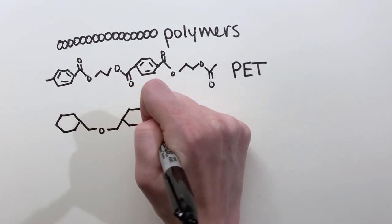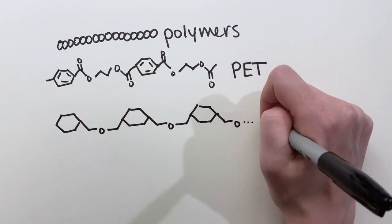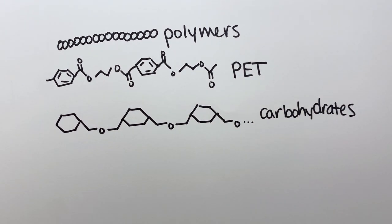Polysaccharides, a type of carbohydrate for example, are natural polymers. They are made of simple sugars like glucose, which are strung together into long chains.